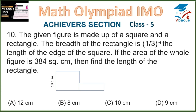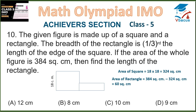Question 10. The given figure is made up of a square and a rectangle. The breadth of the rectangle is 1 third of the length of the edge of the square. The area of the whole figure is 384 square centimeters. The square side is 18 cm, so its area is 18 × 18 = 324 square centimeters. Area of rectangle = 384 − 324 = 60 square centimeters. One third of 18 is 6, and 60 divided by 6 equals 10. The length of the rectangle is 10, so option C is correct.